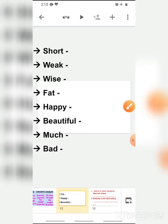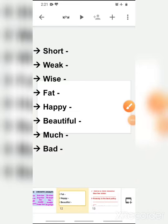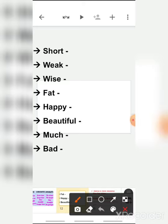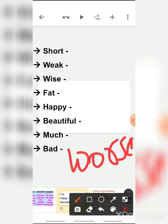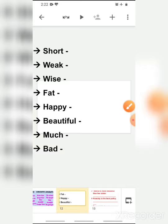Bad — what will be the comparative and superlative degree of bad? Not 'badder' and 'baddest' — that is wrong. The comparative degree of bad is 'worse' (W-O-R-S-E), and the superlative degree is 'worst' (W-O-R-S-T). So: short, shorter, shortest; weak, weaker, weakest; wise, wiser, wisest; fat, fatter, fattest; happy, happier, happiest; beautiful, more beautiful, most beautiful; much, more, most; bad, worse, worst.